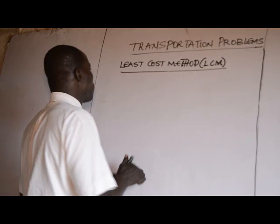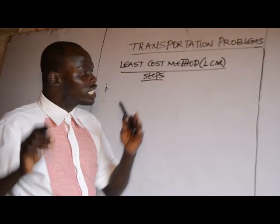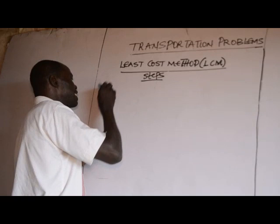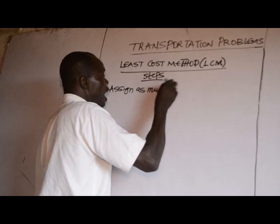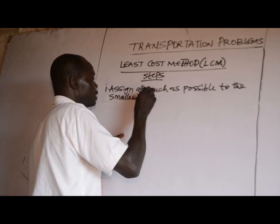What are the steps for solving transportation problems using the least cost method? Step number 1: assign as much as possible to the smallest unit cost.